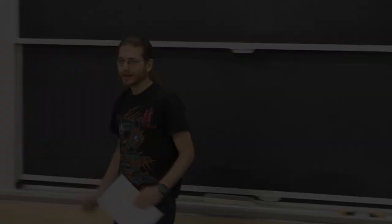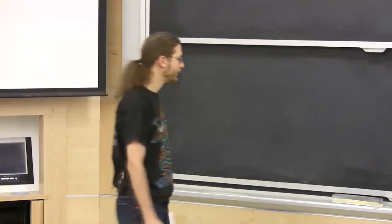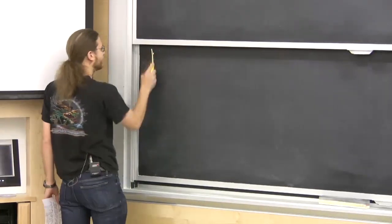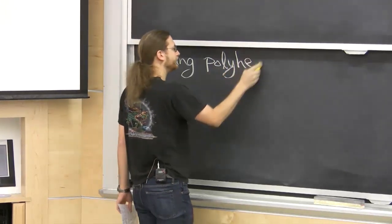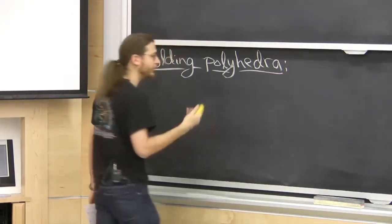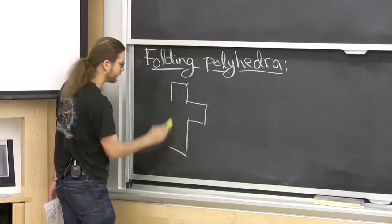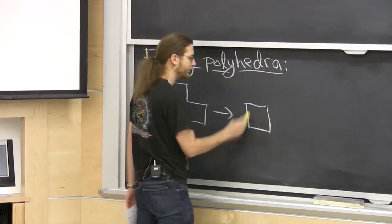Today we're really going to take on folding polygons into polyhedra in a big way. We kind of got started last time. Today we're going to do the real thing with some tape and scissors. So folding polyhedra is pretty much the last kind of folding we're going to be talking about in this class. We covered linkage folding, paper folding, unfolding polyhedra, and finally, folding polyhedra.